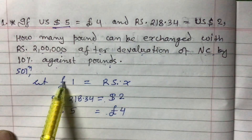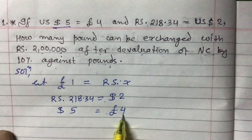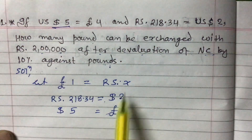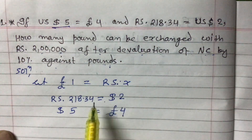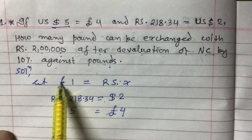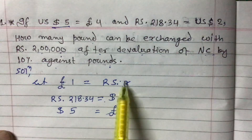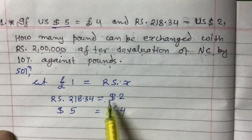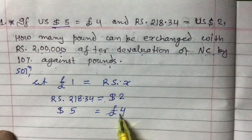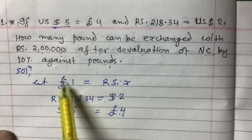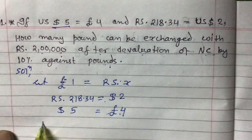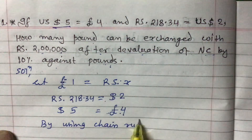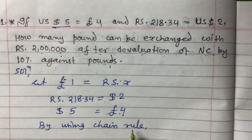We began from pound and terminated at pound, so our chain is completed. After completion of the chain, the product of the left side equals the product of the right side. This is how we make the chain: pound equals rupees, that rupees equals dollar, and that dollar equals pound — chain is completed, so we can apply the chain rule.